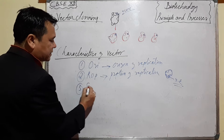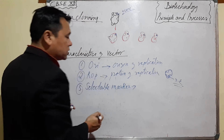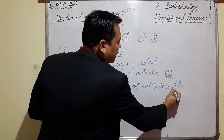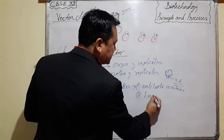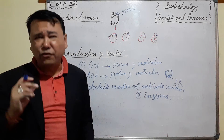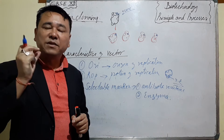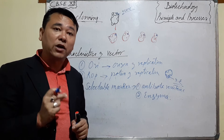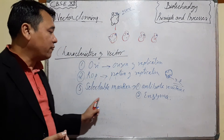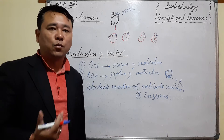It must have a selectable marker. The selectable marker includes antibiotic resistance genes — for example, enzyme-based antibiotic resistance. The main function of the selectable marker is it helps to know whether a plasmid containing a foreign gene has been inserted into the host organism or not, when the host organism is placed with the foreign gene.